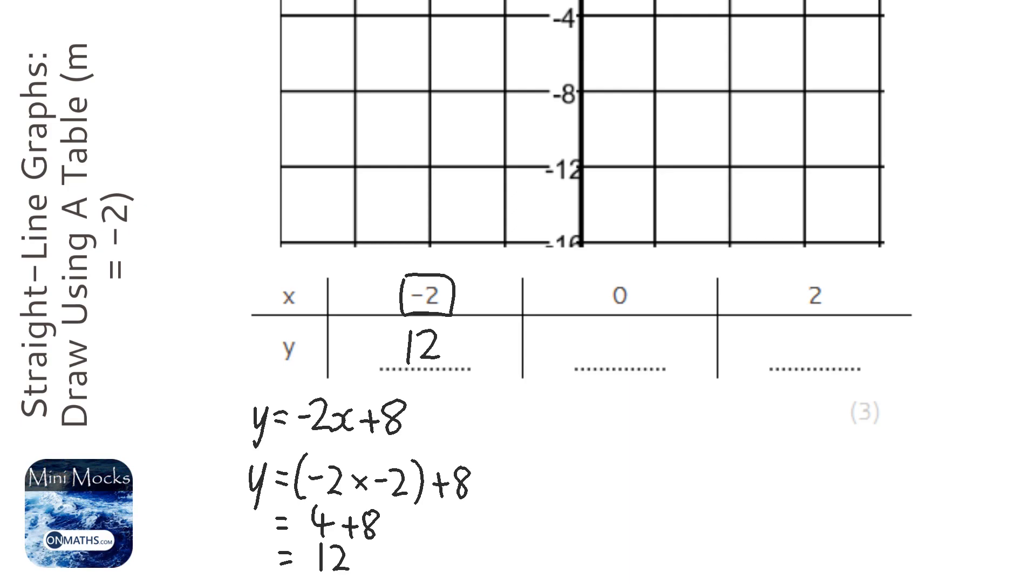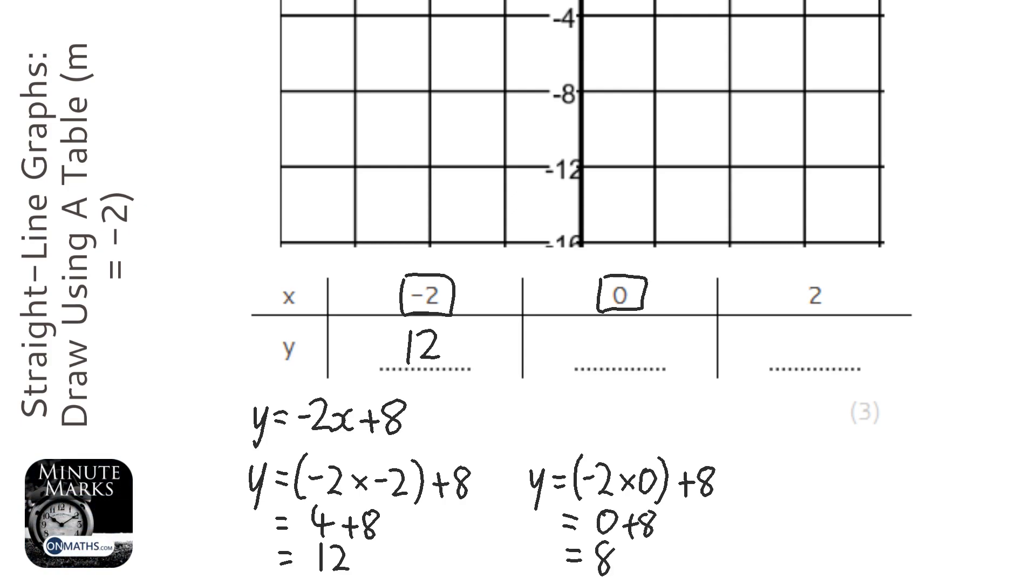Then we're going to do it for this one. So y equals minus 2 times 0 plus 8. Minus 2 times 0 – anything times 0 is 0, so it's 0 plus 8, which is just 8.